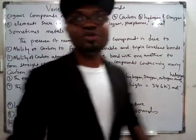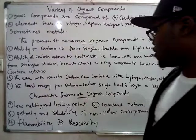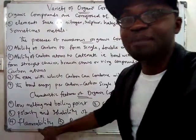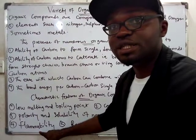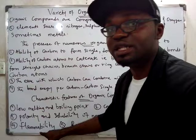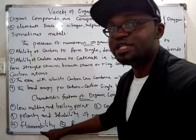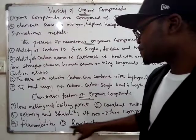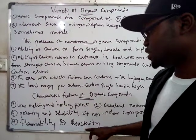Now let's look at the characteristic features of organic compounds. Number one: organic compounds are highly flammable — they can burn and they can explode. That's why fuel can be used to drive a car; when fuel burns in the engine, it develops energy that the car uses to move. Reactions of organic compounds are slow.